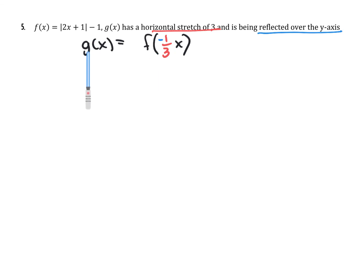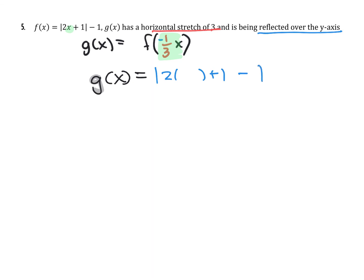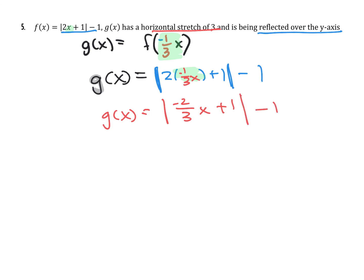Nothing outside — no adding, no multiplying on the outside. Both transformations happen inside, so we've translated the words into function notation. To find g, we take f and plug in negative one third of x everywhere we see an x. Everything else about g and f stays the same. F is the absolute value of 2 times x plus 1 minus 1. Replacing x with negative one third x: g of x equals the absolute value of negative two thirds x plus 1, minus 1.